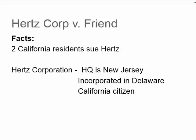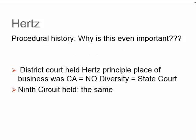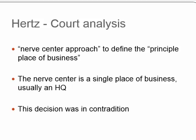The court looked at previous decisions and decided it wanted to come up with a new test — a new analysis for how to decide who had jurisdiction. That was the nerve center approach: rather than just looking at headquarters or a single place of business, the court wanted to know where the company does the most business, where most of its activity is concentrated.